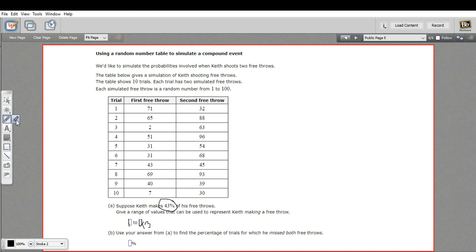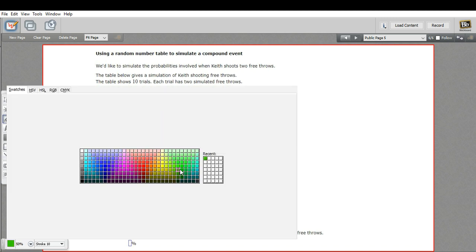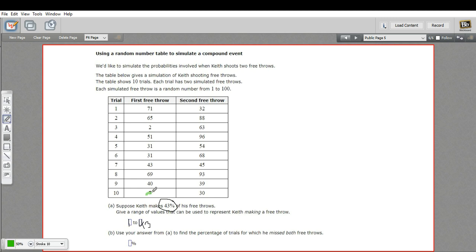I'm just going to take a second to mark those made free throws. We'll choose green for that. So that one's less than 44, that one, that one. That one, that one's made, that one's made, that one, that one, and that one. I think I got them all. So these are all numbers between 1 and 43. Those are free throws that Keith made.